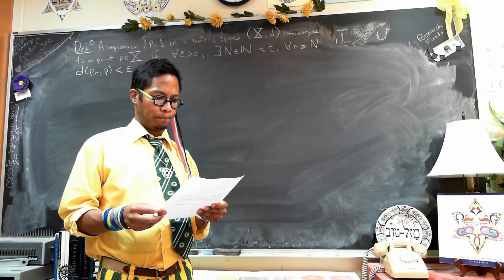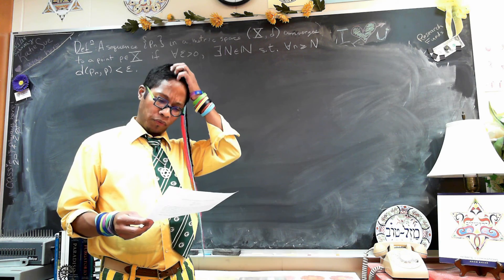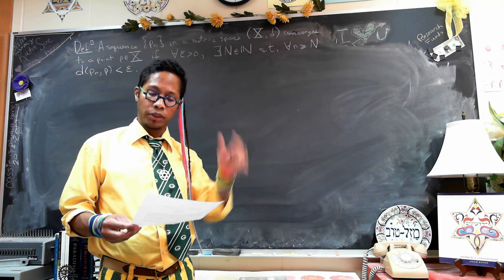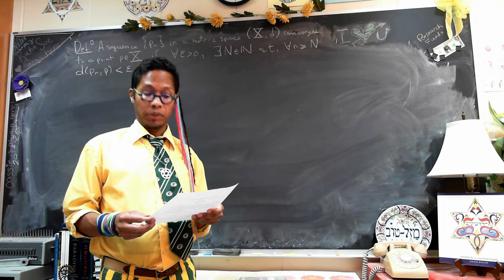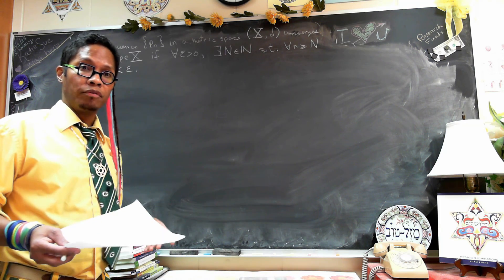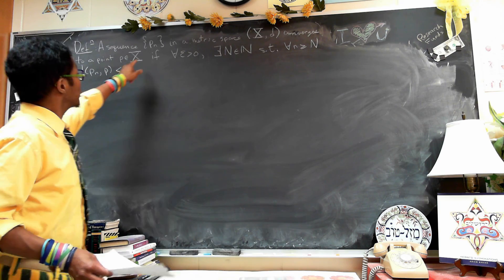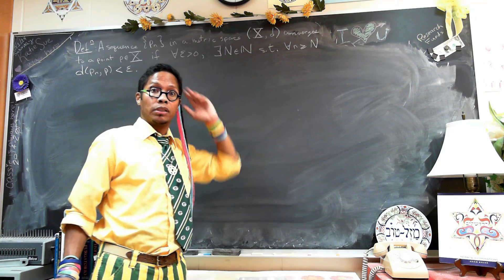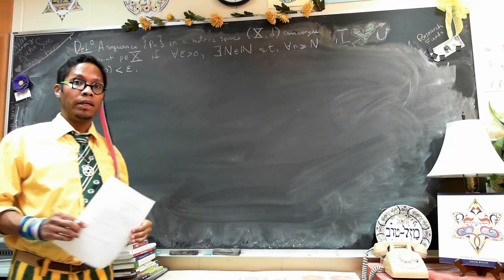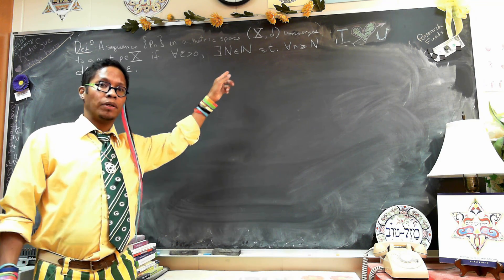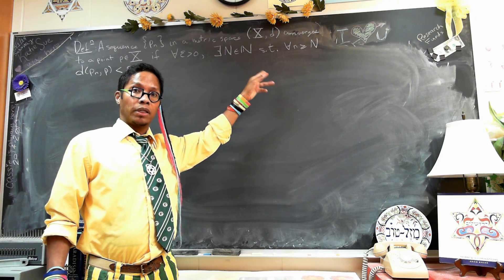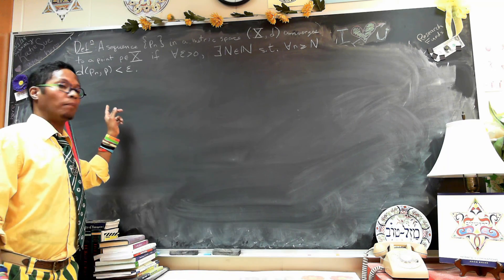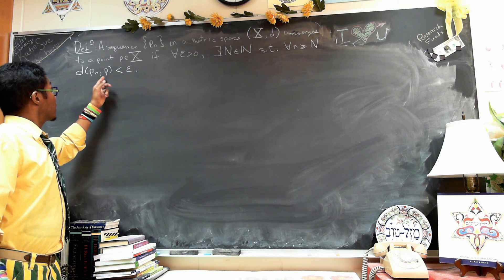We're going to prove that a sequence converges using the definition of convergence via the epsilon-N style proof. Recall the definition: a sequence P_n in a metric space (X, d) converges to a point P in X if for every epsilon greater than zero there exists a natural number N such that for all n greater than or equal to N, the distance from P_n to P is less than epsilon.